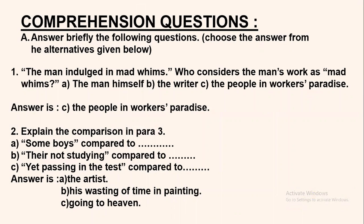As per your textbook, the first comprehension question states: answer briefly — who considers the man's work as mad whims? In the chapter, whatever work is done by the wrong man in the paradise has been considered as mad activities. The options are: the man himself, the writer, or the people in the workers' paradise. The answer is C — the people in the workers' paradise were the ones who considered him indulged in mad whims.